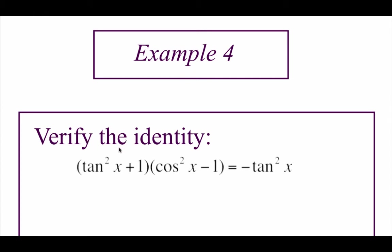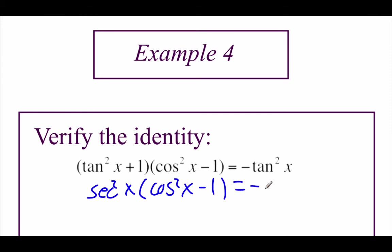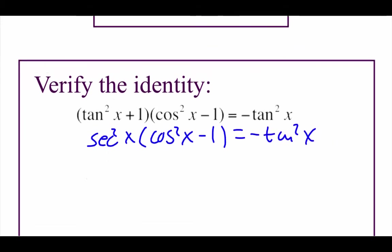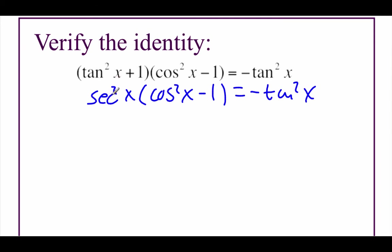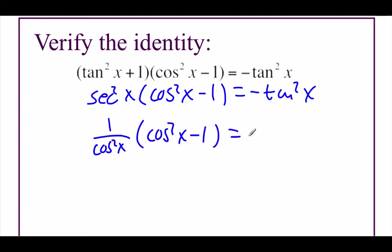This is our last example. We're going to verify this identity. The first thing I notice is tangent squared of x plus one — that's one of our Pythagorean identities: tangent squared plus one equals secant squared of x. Then we've got this times cosine squared of x minus one, and we're going to show that equals negative tangent squared of x. Inside the parentheses we've got a cosine, and outside we've got a secant — we know they're related. So I'm going to take secant squared of x and make it one over cosine squared of x, times cosine squared of x minus one, equals negative tangent squared of x.